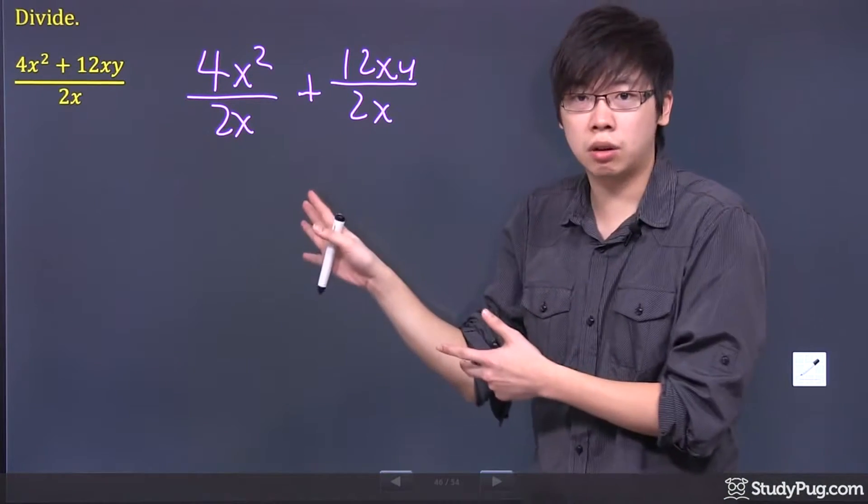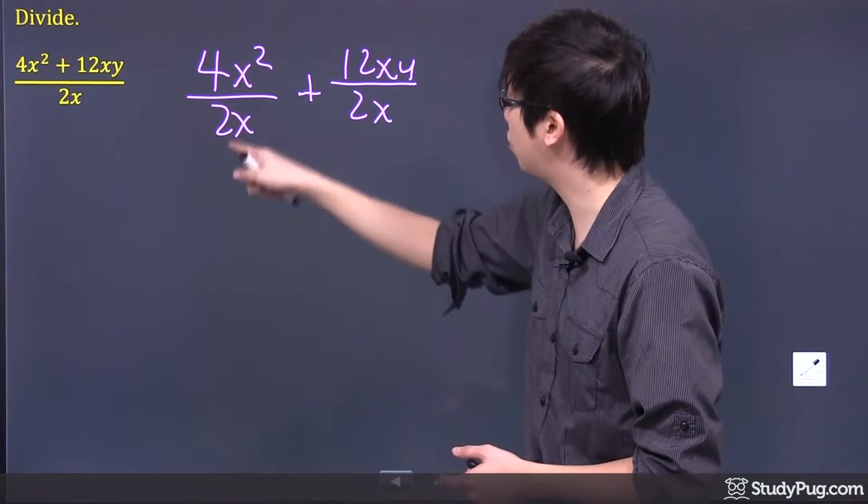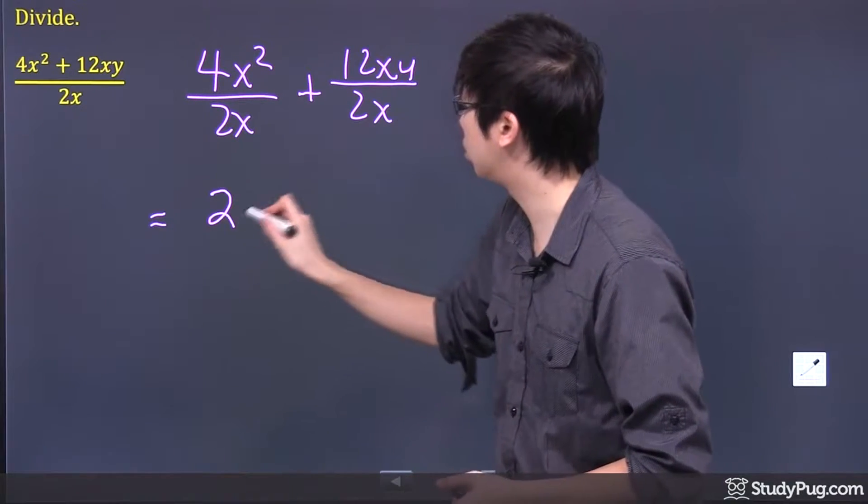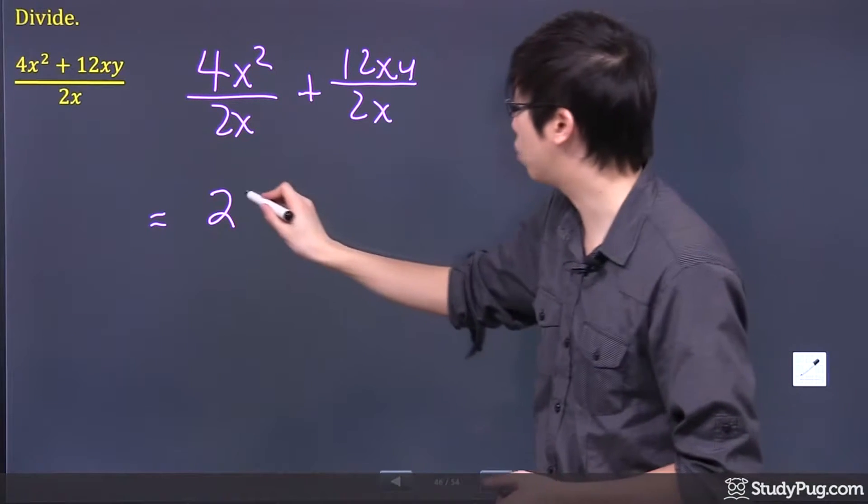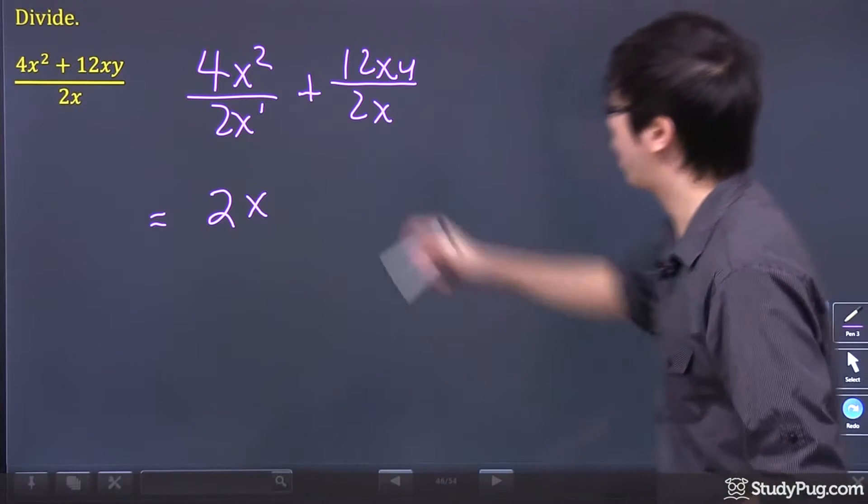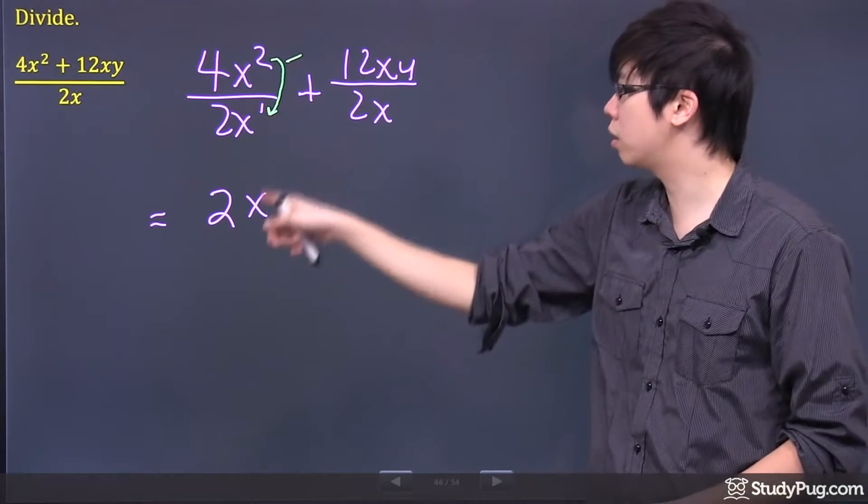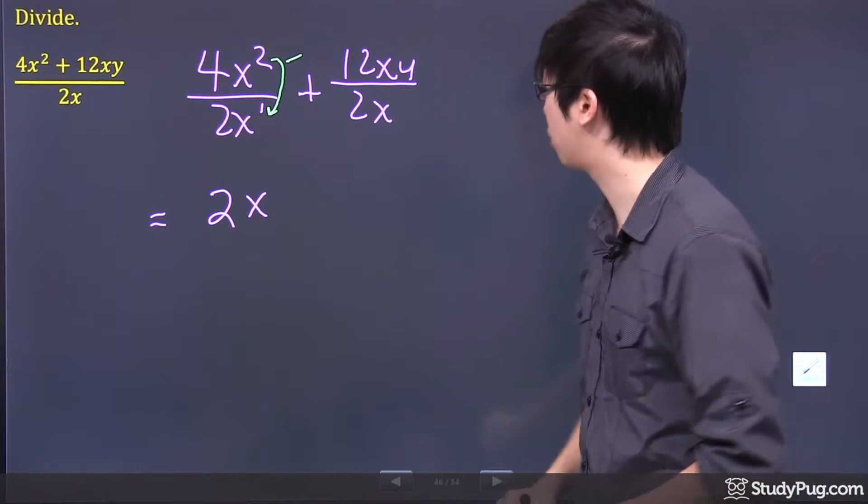Now it looks easier because you can actually just do the calculation individually. So we have 4 over 2 gives me 2. x squared over x gives you 1x. Now remember during the work we are actually subtracting the exponents. So 2 minus 1 is left with just 1x.